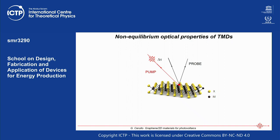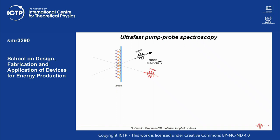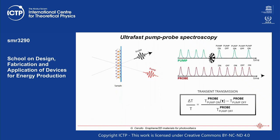Let me give a brief introduction to ultrafast pump-probe spectroscopy. This is a very general technique — here I'm showing a two-dimensional semiconductor, but it can be applied to any material. You excite the material with a light pulse — the pump pulse — then after a time delay you send the probe pulse and measure the transmission of this probe. You also measure the transmission without the pump, then calculate the transient transmission as the difference between these two values. This difference depends on the delay between the two pulses.